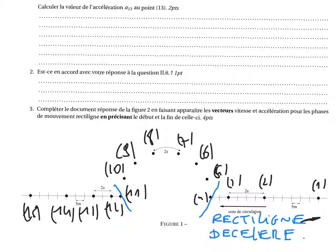Pour le deuxième, on voit que nous avons un mouvement circulaire. La trajectoire est un cercle, donc un mouvement circulaire. Et on s'aperçoit que la distance entre deux points consécutifs est sensiblement la même. Donc la vitesse est constante, c'est un mouvement circulaire uniforme.